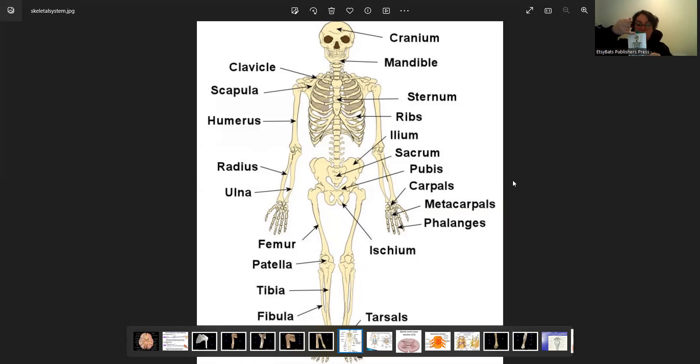Pointing towards the head, we have the frontal bone. And the scapula is essentially the area between your shoulder and your chest.